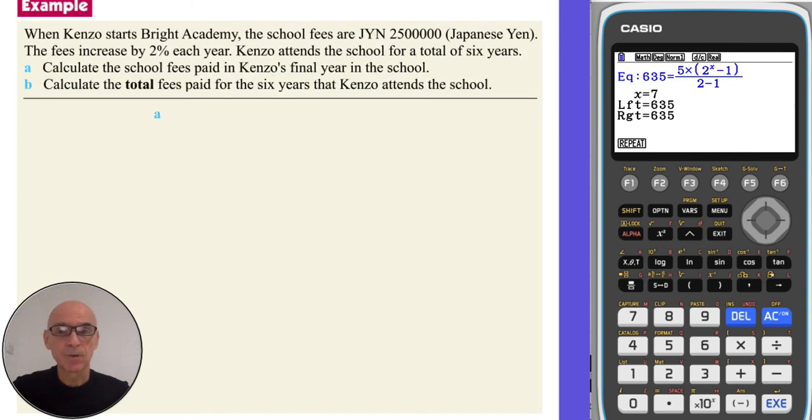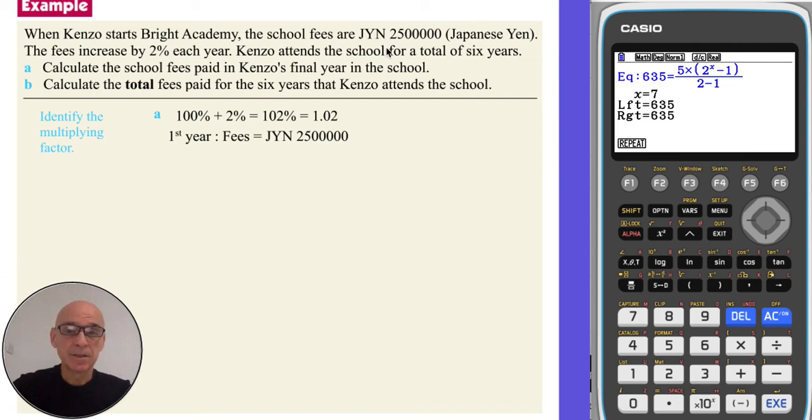In this final question, we're told that Kenzo's school fees increase by 2% each year. And we're asked to calculate the school fees that he pays in his final year. So if we start by identifying a multiplying factor. 100% increased by 2% is 102% and as a decimal, that's 1.02. So in his first year, we're told the fees are 2,500,000 Japanese yen.